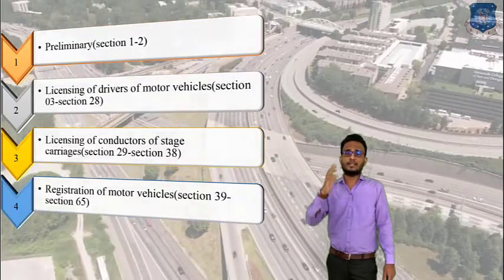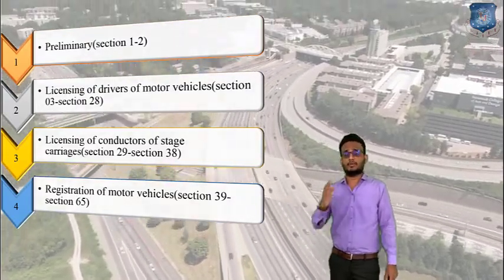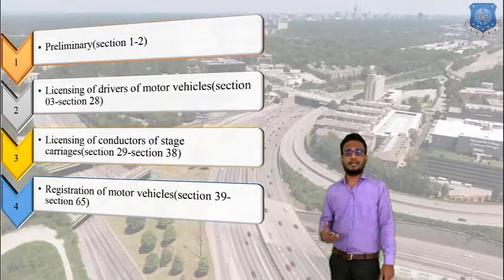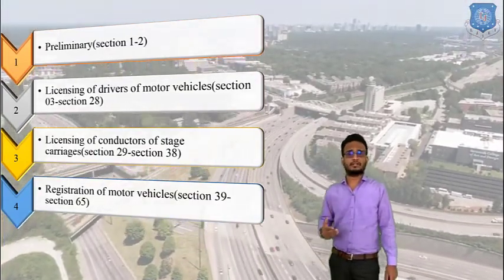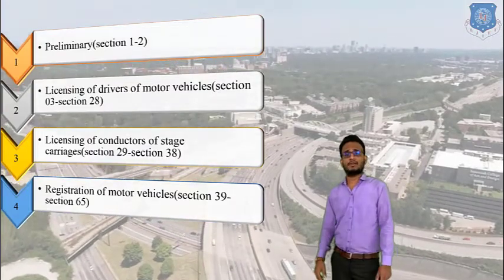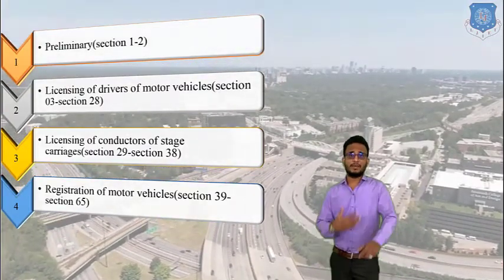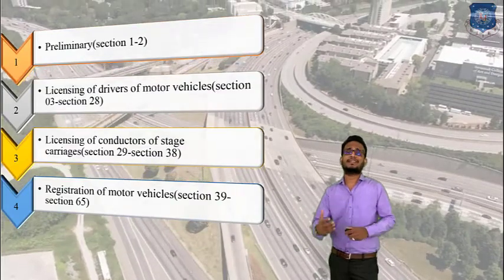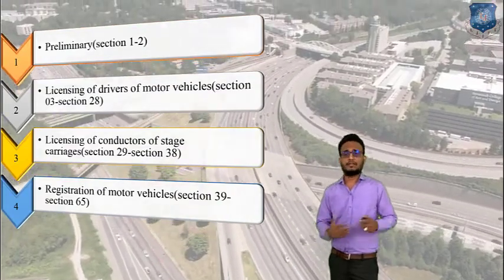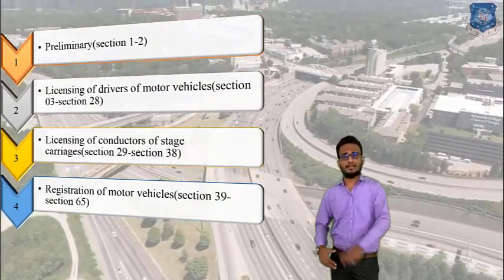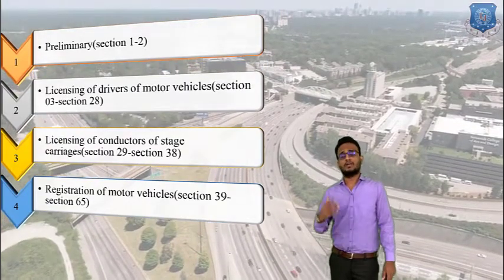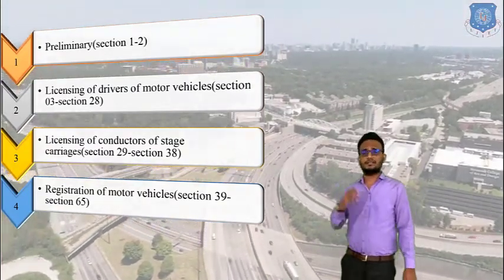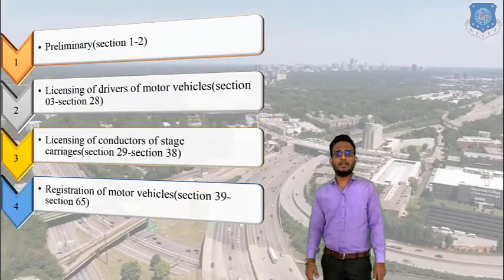So these are the main important chapters of the Motor Vehicle Act: Chapter 1 preliminary section containing sections 1 and 2; Chapter 2 licensing of drivers of motor vehicles covering 2-wheelers, 3-wheelers, 4-wheelers, and trucks; Chapter 3 licensing of conductors; and Chapter 4 registration of motor vehicles, sections 39 to 65.